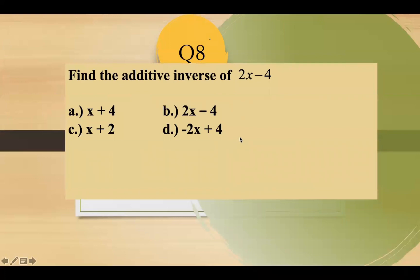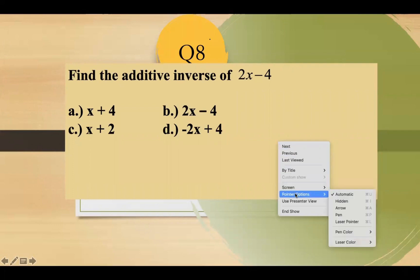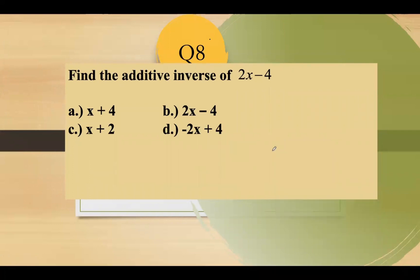Question number 8: find the additive inverse of negative 2x minus 4. The additive inverse means you change all signs by multiplying by negative one. Distributing the negative gives 2x plus 4. So the answer is letter D.